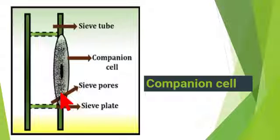Now let's discuss companion cells. They contain a nucleus. They not only control the activity of their own cells but also control the activity of neighboring sieve tube elements. They release ATP for the translocation of food.